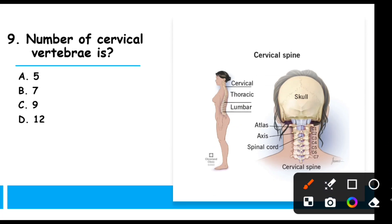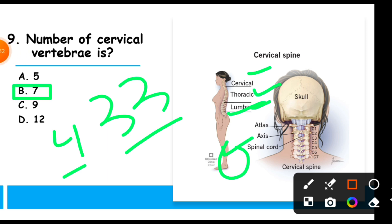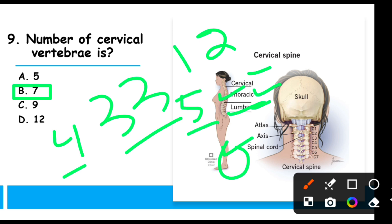MCQ 9: The number of cervical vertebrae is — total vertebrae are 33, divided into four divisions: cervical, thoracic, lumbar, and sacral. Cervical vertebrae total 7, so the correct option is option B. Thoracic vertebrae total 12, lumbar total 5, and sacral vertebrae, located below lumbar, also total 5.